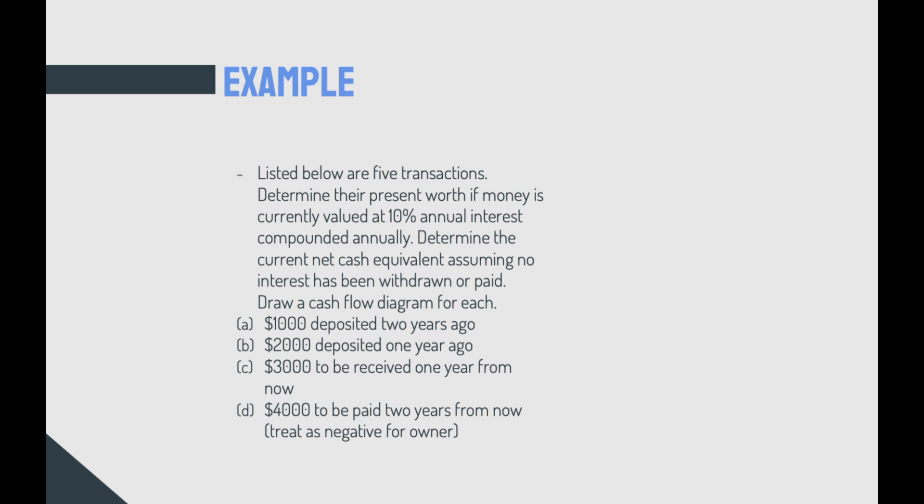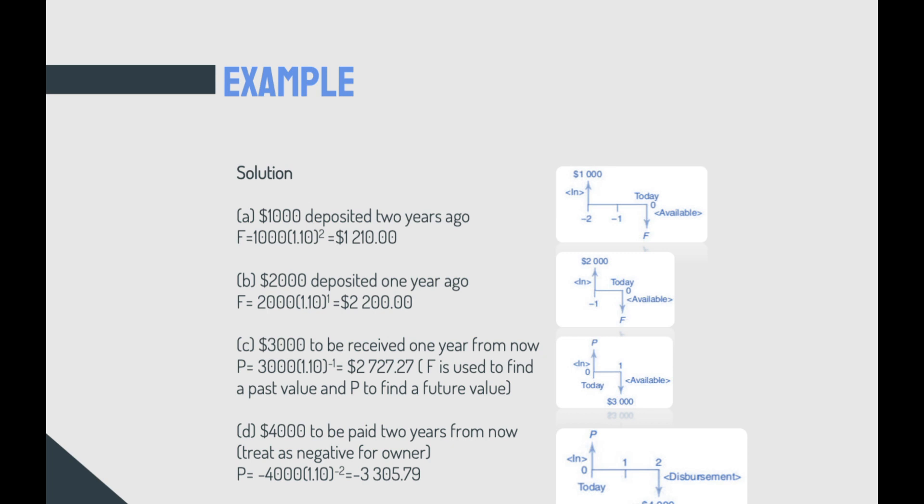Now, let's have another example. Below, we have five transactions. Determine their present worth if money is currently valued at 10% annual interest compound annually, and determine the current net cash equivalent, assuming no interest has been withdrawn or paid, then draw a cash flow diagram for each. Now, $1,000 deposited two years ago - how would it look like? Firstly, I would calculate the F, what's the future value would be, or maybe the past value in this case. F equals $1,000 by 1.1 to the power of 2, that would be $1,210. You can see $1,000 as an arrow up and the final value today as an arrow down.